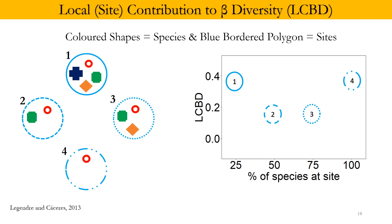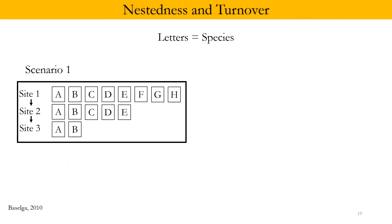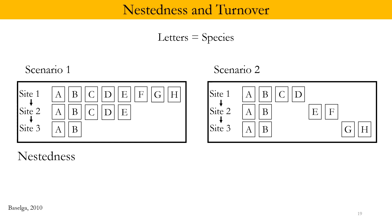The other component — nestedness and turnover — is equally important in understanding community composition. Consider this scenario where alphabets are species. As we move from Site 1 to Site 2 we lose species F, G, and H; from Site 2 to Site 3 we lose species C, D, and E. The composition of Site 3 is a strict subset of Site 2, which is itself a strict subset of Site 1 — a perfect example of nestedness.